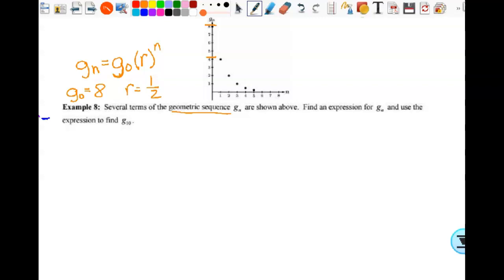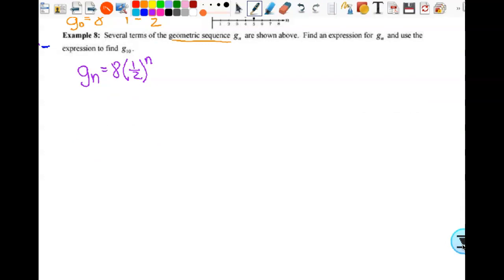So now we need to find our expression. So g sub n is g sub 0, which is 8, times 1 half to the nth power. Then we need to find g sub 10. So g sub 10 is equal to 8 times 1 half to the 10th power. Can I simplify that and make that 4 to the 10th power? No. So I need to take 1 half to the 10th. I know it's 1 over whatever 2 to the 10th is. So I'll get 2, 4, 8, 16, 32, 64, 128, 256, 512, 1024. So that means that is 8 over 1024.